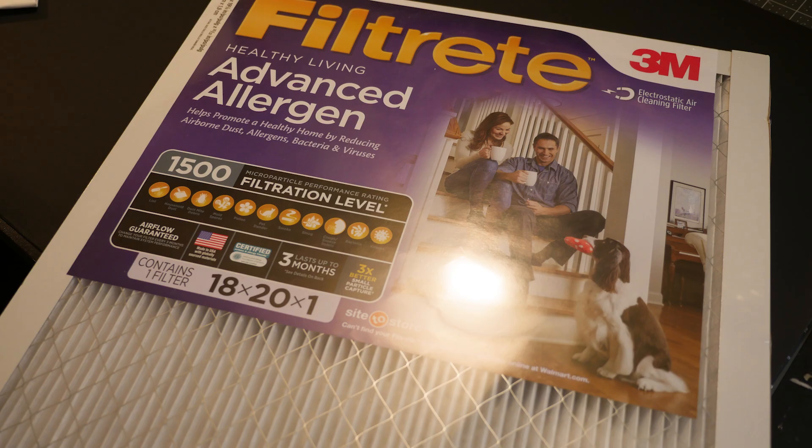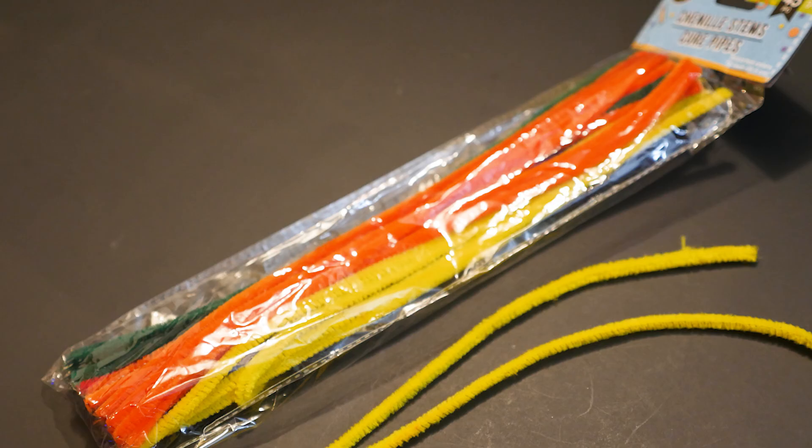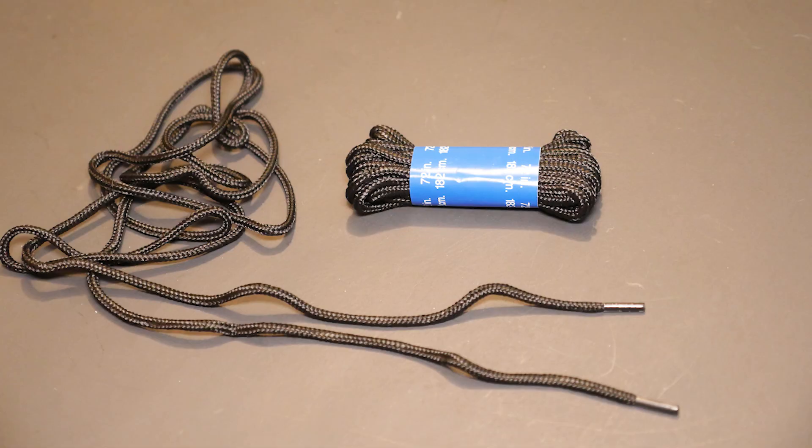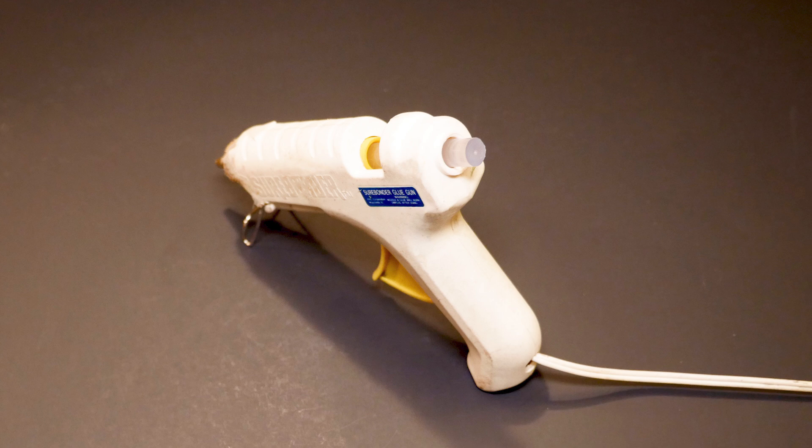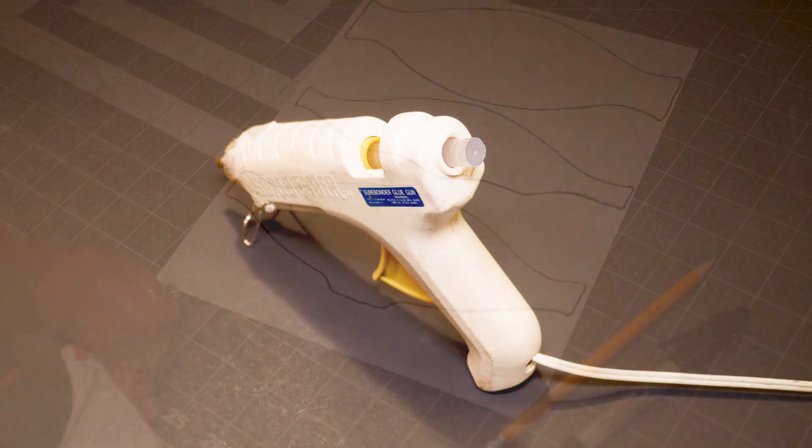To make this mask, I'm using one polypropylene fabric bag. The size of this bag is 16 by 15. I'm using an 18 by 20 Filtrete advanced allergen electrostatic air cleaning filter with a filtration level of 1500. I'm using pipe cleaners, shoestrings, scissors, exacto knife, and a hot glue gun with Gorilla Glue sticks. You're also going to need paper, pencil, marker, and both cloth and plastic gloves.